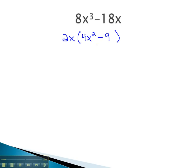Once we have done this, we can take a look at that parentheses and decide if we can factor further. Notice we have a difference of squares. We can take the square root of 4x², which is 2x, and the square root of 9, which is 3.